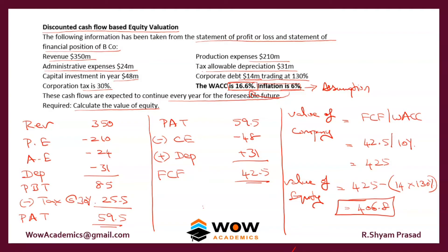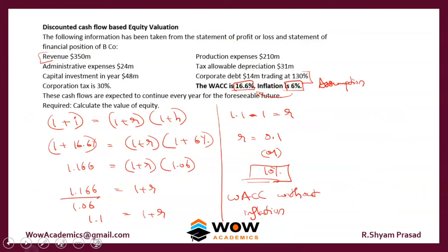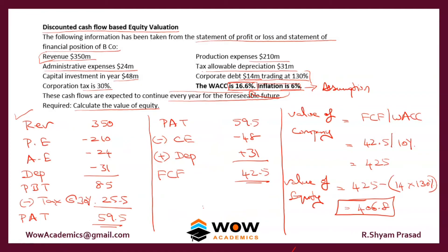To recap: follow the format to get the free cash flow, then divide by WACC to find the company value — the assumption being that the same cash flow continues for the foreseeable future as a perpetuity. Because the WACC in the exam explicitly includes inflation, and all cash flow figures are single-year values, you must remove inflation from the WACC using the Fisher formula. This gives a real discount factor of 10%, which was used to find the company value of 425.